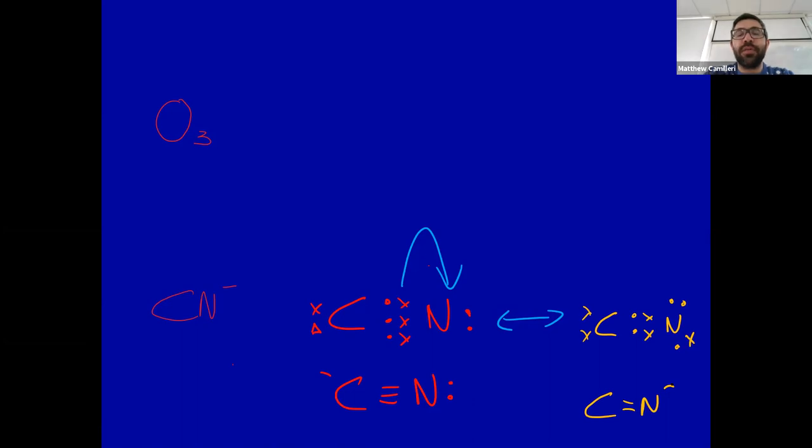Now the most stable one would be that, because this does not obey the octet rule. There is another one where you will have a dative bond I believe, but cyanide is that one you will have a dative bond.